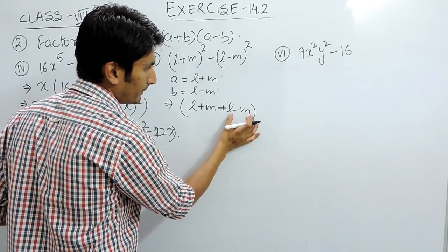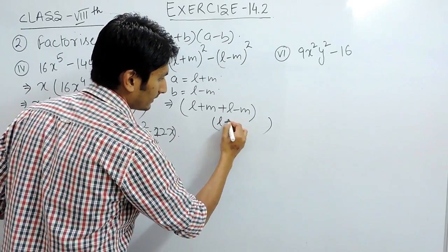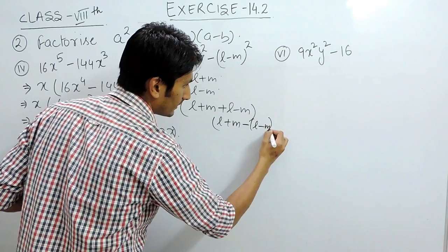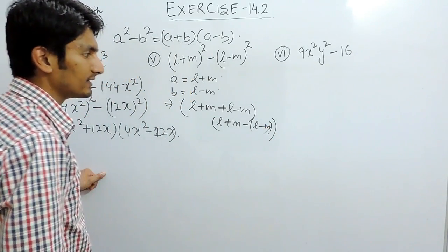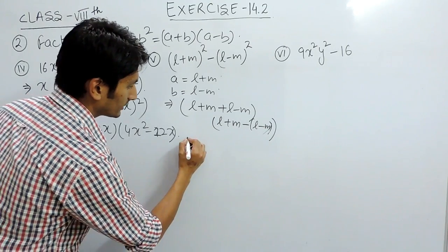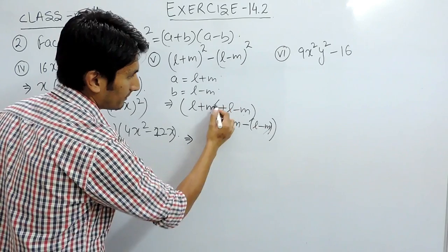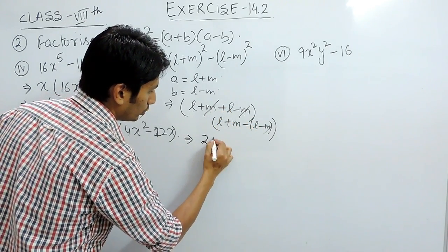So this is a+b, that should be multiplied with a-b. Our b is (l-m). Further solving it, this plus and this minus can be cancelled out, and this l plus this l is 2l.